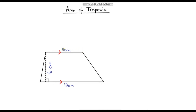So what defines a trapezium first of all? Well a trapezium has four sides, so it's a type of quadrilateral, but the main thing that defines a trapezium is that it only has one pair of parallel sides, which we can see with these red arrows here. These red arrows tell us that this length and this length are parallel, so they never meet each other. But a trapezium only has one pair of parallel sides, so these two lengths are not parallel.